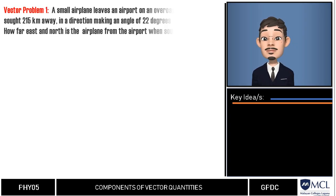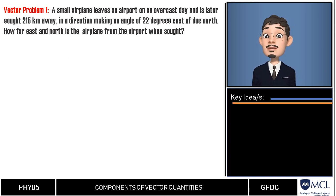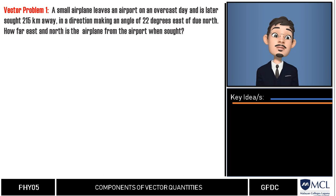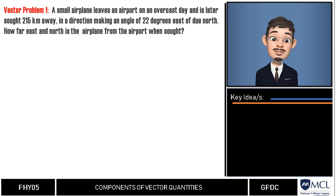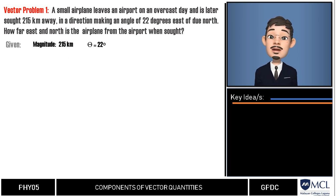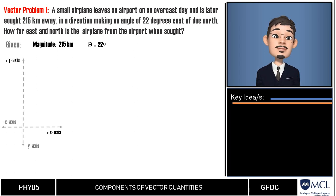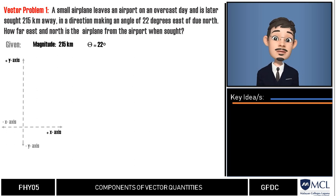A small airplane leaves an airport on an overcast day and is later spotted 215 kilometers away in a direction making an angle of 22 degrees east of north. How far east and north is the airplane from the airport? We are given a magnitude of 215 kilometers and an angle of 22 degrees east of due north. We need a rectangular coordinate system to graph this vector displacement, with the positive x direction due east and y due north. Our airport is at the origin (0, 0).